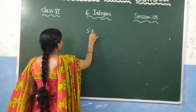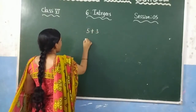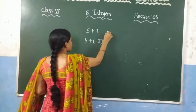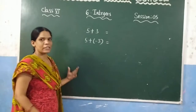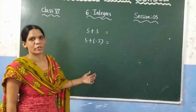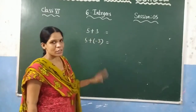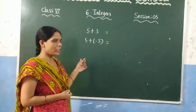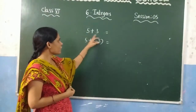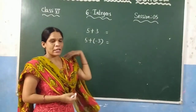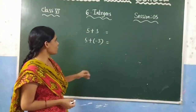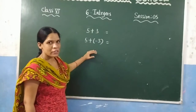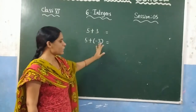Suppose you want to add 5 plus 3, and suppose you want to add 5 plus negative 3. We are adding two integers — 5 and 3 are two integers, and similarly 5 and negative 3 are also two integers. In the first example we are adding positive integers, and in the second one we are adding a negative integer.